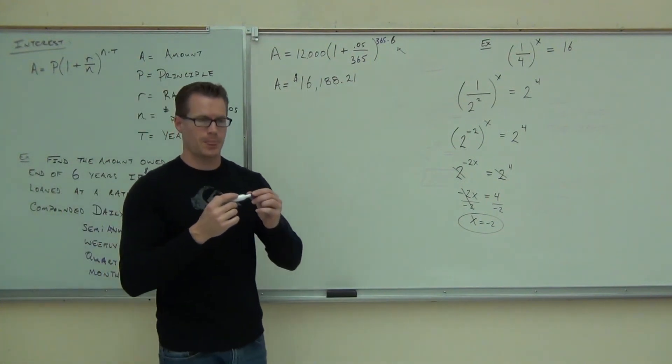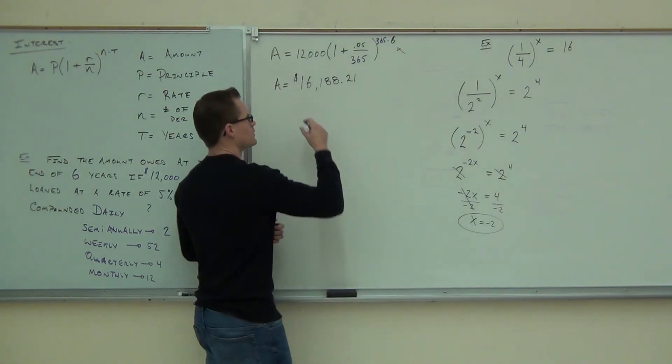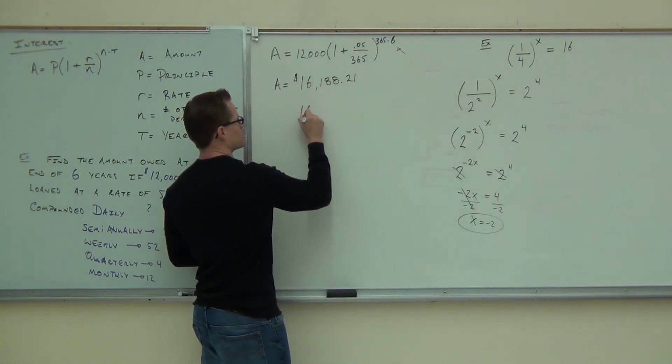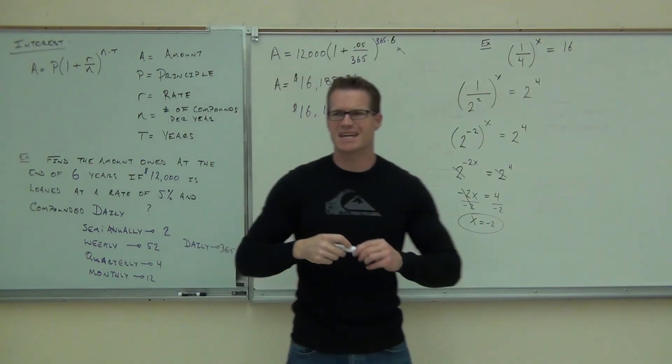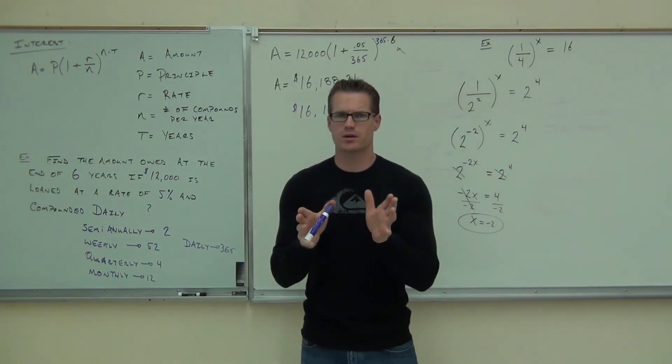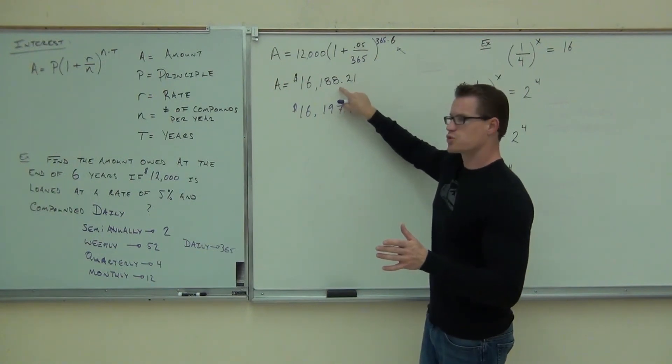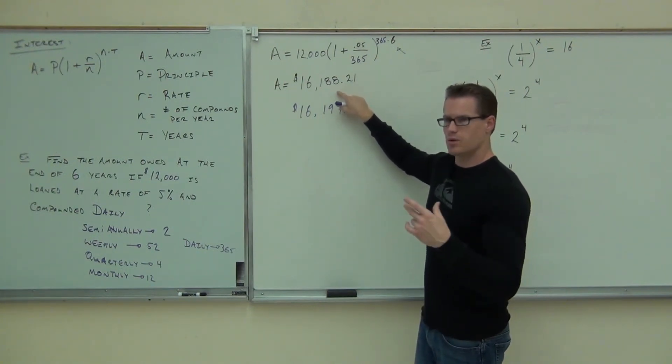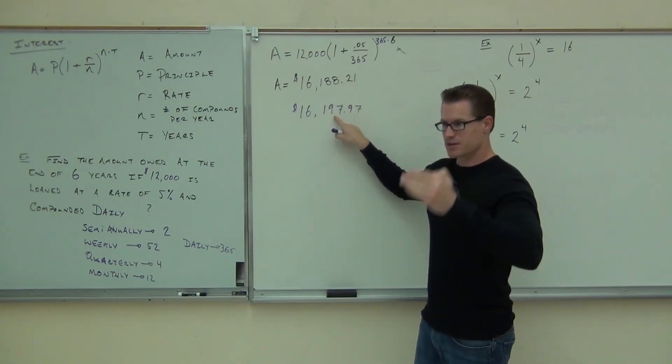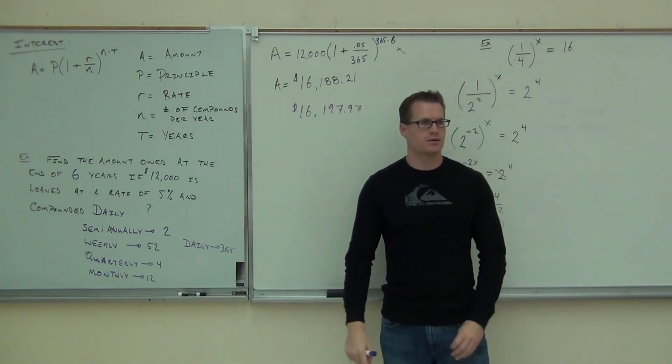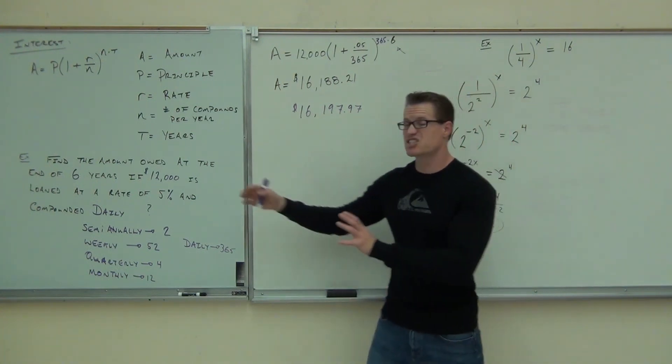Did anybody get it? It should be 16,200 something. Almost. What is it? 16,197. Almost there. Wait a second. I want you to think about this for a minute. Okay, look at the board with me. This is compounded 12 times a year, right? That means that only once a month do you get the interest tacked on for your payment. This is compounded every single day of the year. Is it much different? No. It's not. It's less than $10. $10 difference after six years.